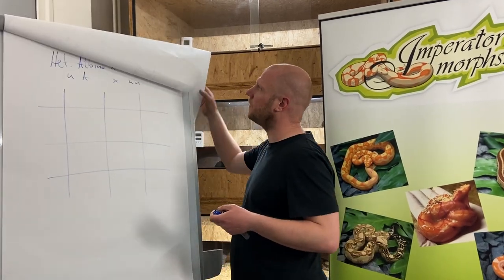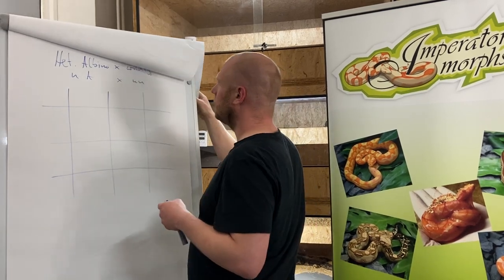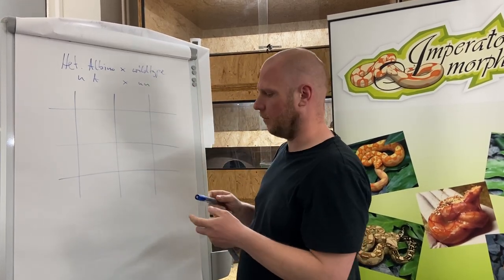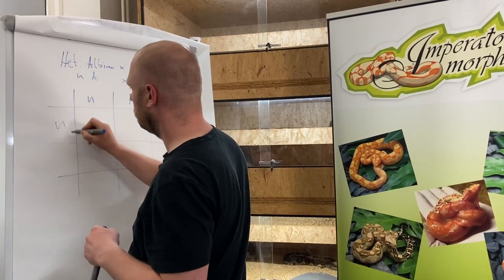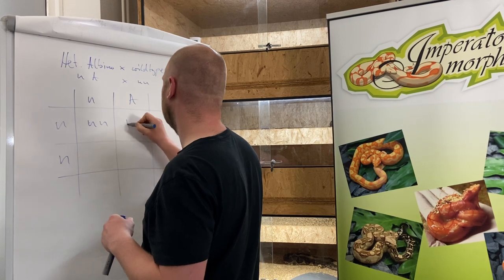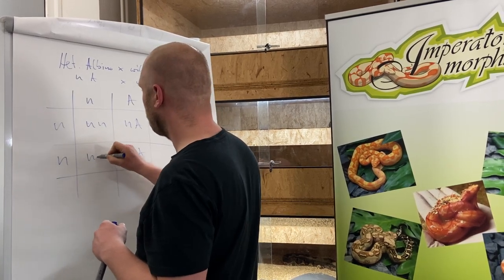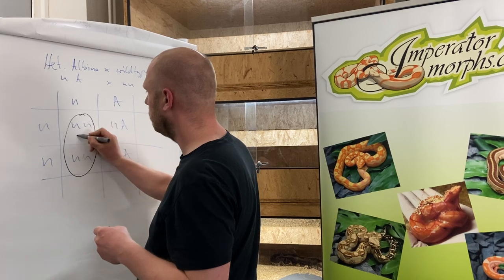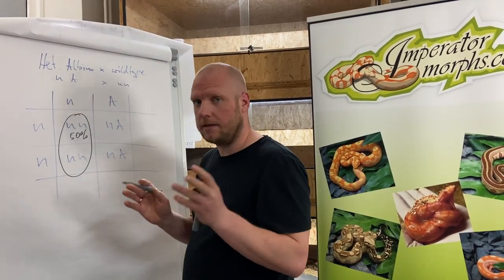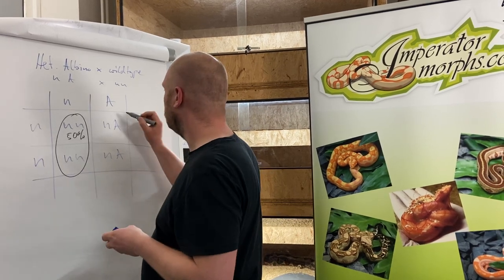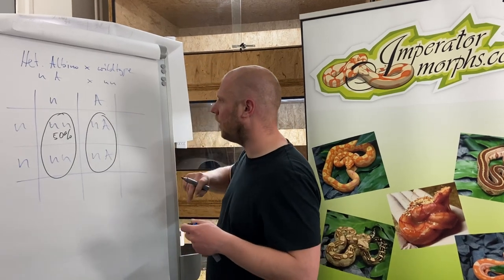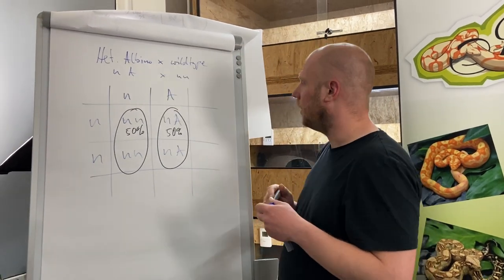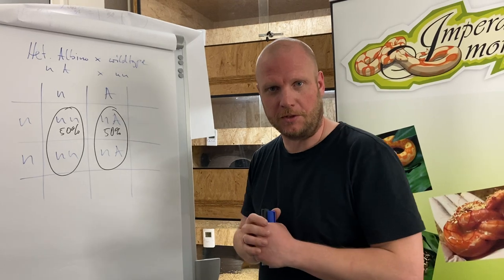Moving on to 50 percent pos heads. If we are breeding a het albino to a wild type, it looks like this. We have no visuals in this litter — 50 percent are regular wild types without any hidden genes, and we do have 50 percent that are 100 percent het albinos.